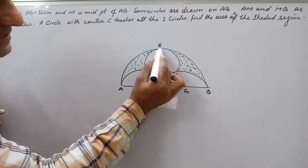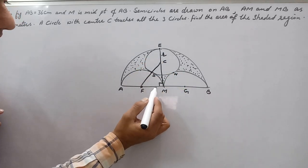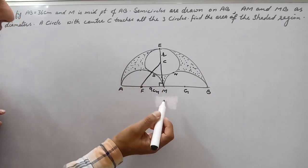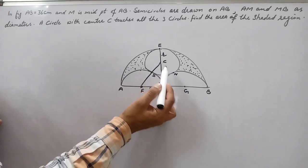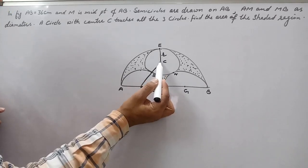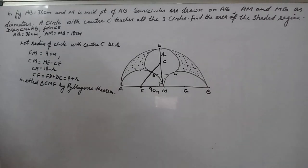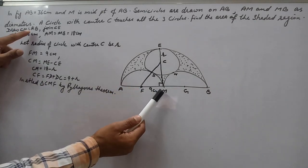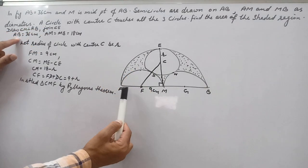Now you can see here CE. Suppose the radius of this circle is R. So CE is R and FM will be 9 centimeters. We will apply Pythagoras theorem to find the radius of this circle with center C. So first of all, draw CM perpendicular on AB and join CE.